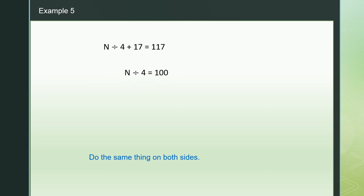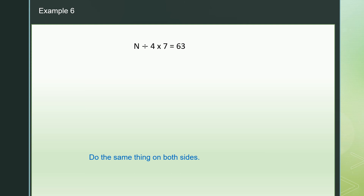x divided by 4 plus 17 equals 117. So I minus 17: the 17 on the left is gone. I minus 17 on the right: 117 minus 17 is 100. So n divided by 4 equals 100. I want n, so I don't want divided by 4. I times 4 on the left: n divided by 4 times 4 equals n. On the right: 100 times 4, so n equals 400.